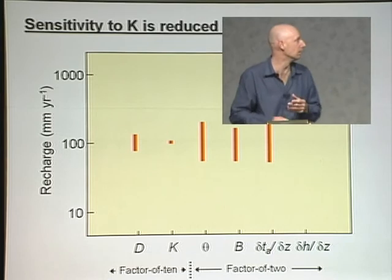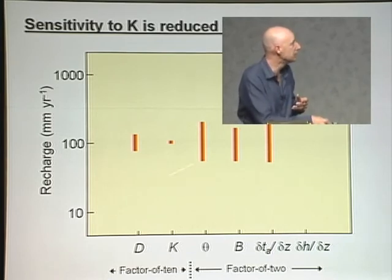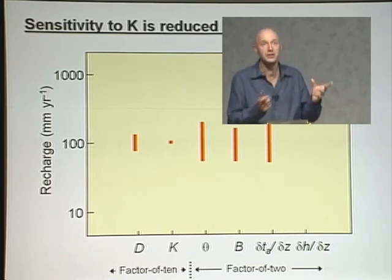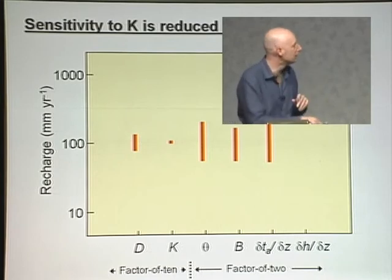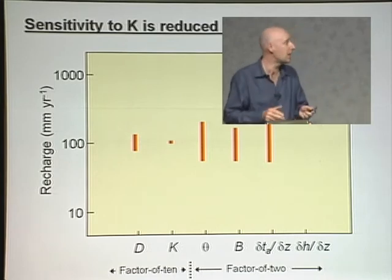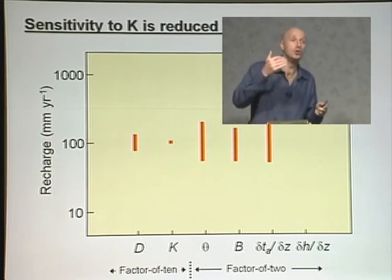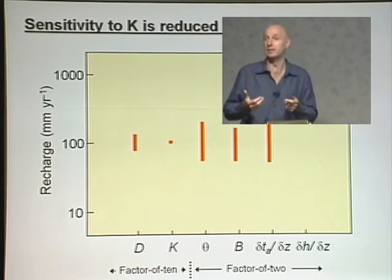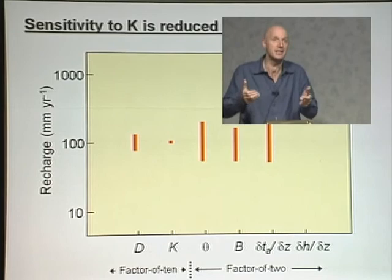We need to know the matrix porosity, the diffusion coefficient. We're actually totally insensitive to hydraulic conductivity. It turns out we don't need to know it to use traces in this way. And that's encouraging because that's probably the least well-known parameter in this system. If we were just to use hydraulics to estimate flow rate, then our uncertainty in recharge would be proportional to uncertainty in hydraulic conductivity, which is huge.